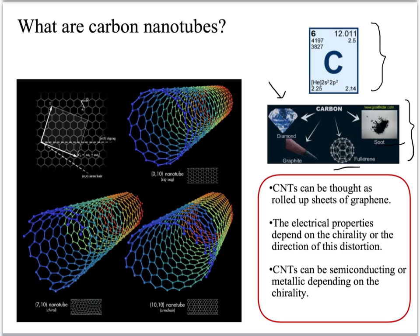If you roll up the sheet of graphene from point A to point B to form a nanotube, then we have a nanotube with chirality (N, M). If your vector is in the zigzag direction, it's always going to be (N, 0). And if you roll up your graphene sheet in the diagonal direction, it's going to be (N, N), which is an armchair tube.